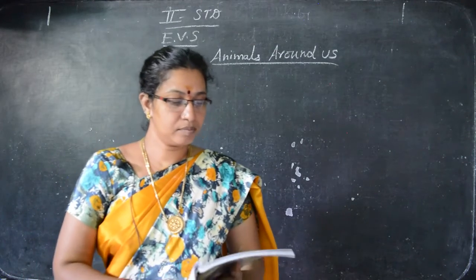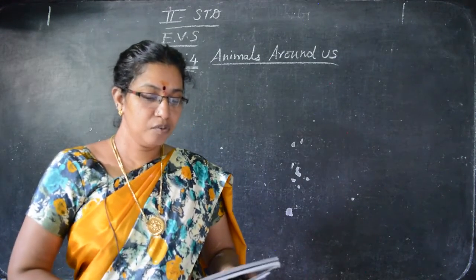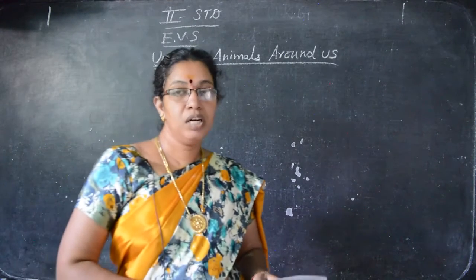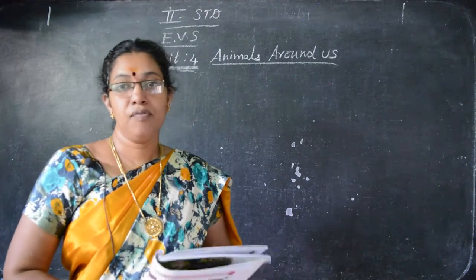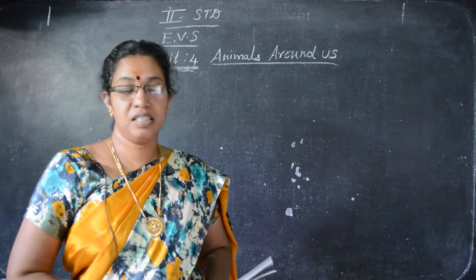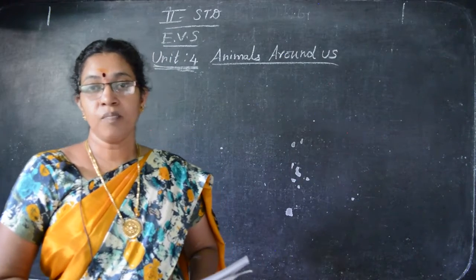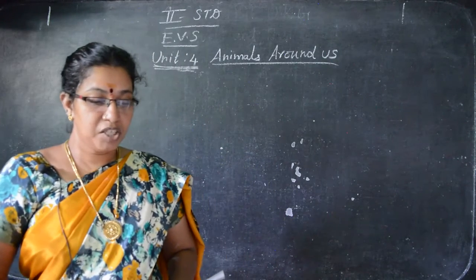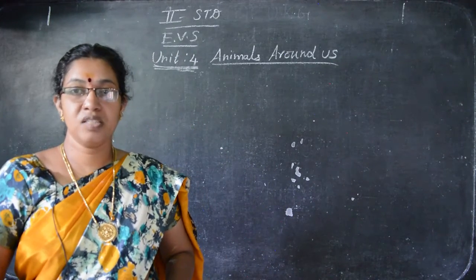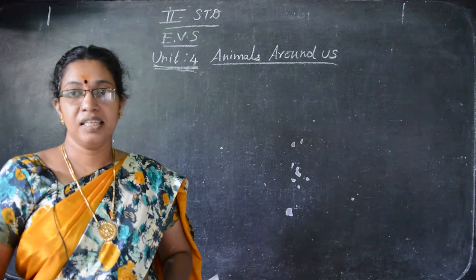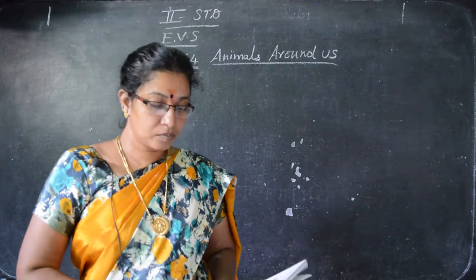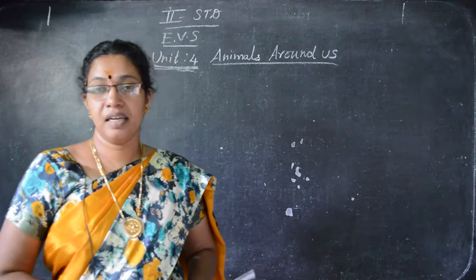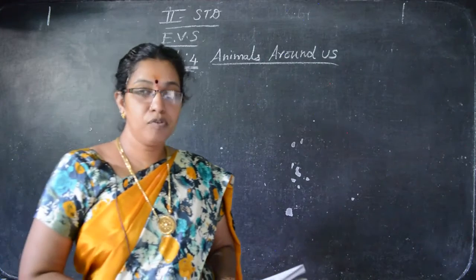Some domestic animals give us food items like milk, egg, meat, and honey. Some give us wool and leather. The cow gives milk, the hen gives eggs, the goat gives us meat, and the honeybee gives honey. The sheep gives us wool — with wool we can make sweaters, socks, and other woolen things. From leather we can make sandals, belts, and hats.